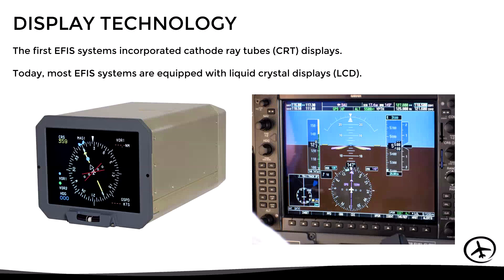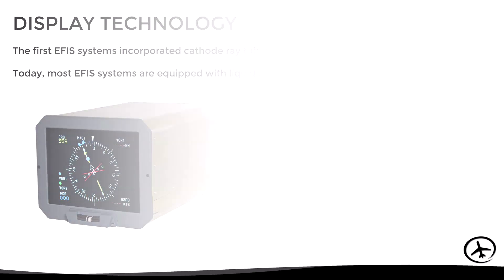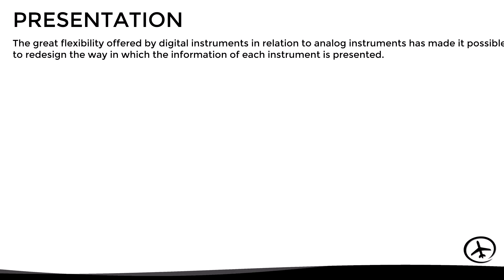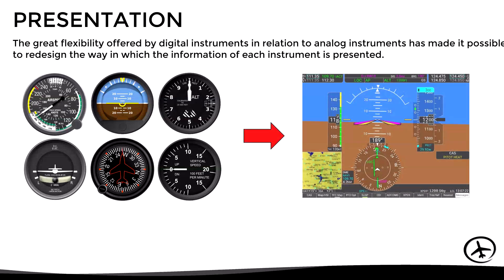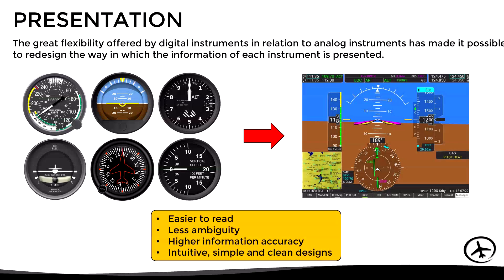Another important change caused by the introduction of the EFIS system is the way in which information is presented to pilots. The great flexibility offered by digital instruments in relation to analog instruments has made it possible to redesign the way in which the information of each instrument is presented. Digital instruments are easier to read, they present less ambiguity, the information is more accurate, and they have intuitive, simple, and clean designs.